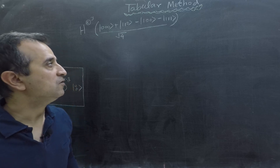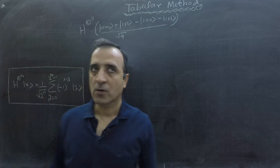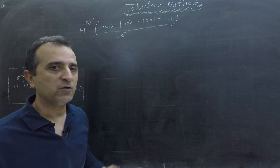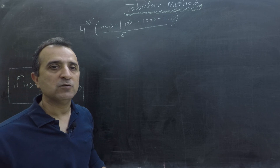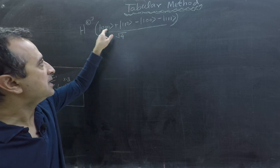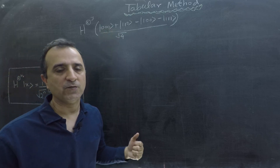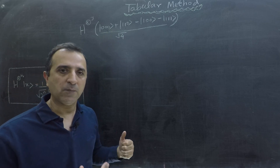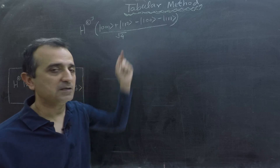We could solve this by repeatedly applying the formula on four different superpositions of qubits, but that means we have to solve an equation with eight times four terms, which will take a substantial amount of time. In this video we will learn a tabular method which will give us the answer much more quickly.